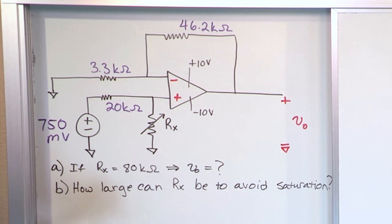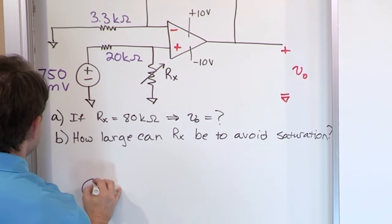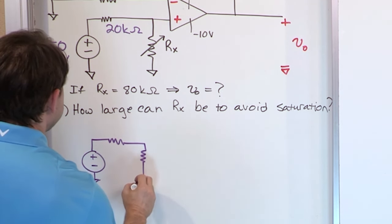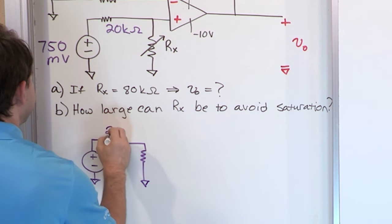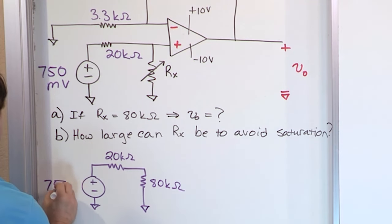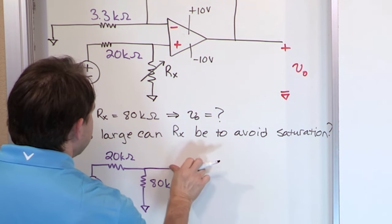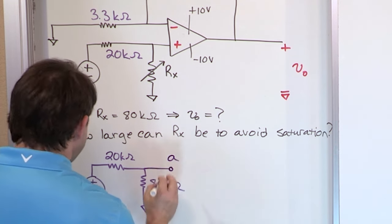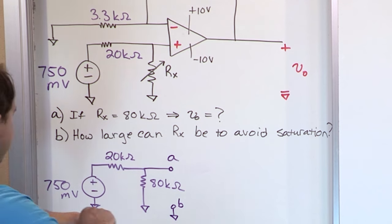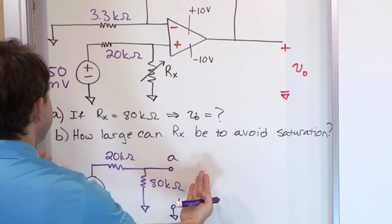What I'm basically saying is that if you look at just the input portion of the circuit — forget about the amplifier — it looks like this: a voltage source connected to ground with a resistance and another resistance forming the network. This resistance is 20 kilohms, this resistance is fixed at 80 kilohms, and the source is 750 millivolts. You're tapping it off at terminal A with terminal B connected to ground. That is what the circuit looks like when you cut the wire and look backwards.